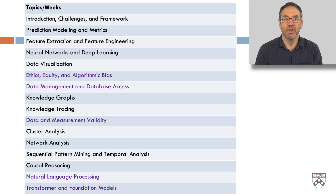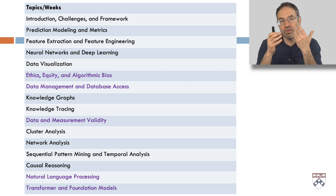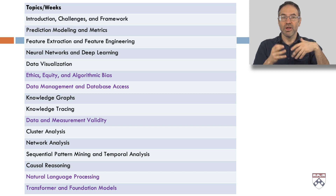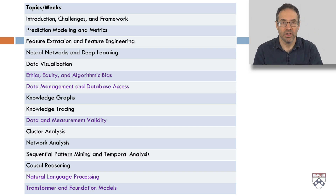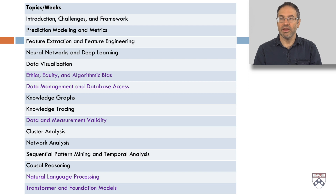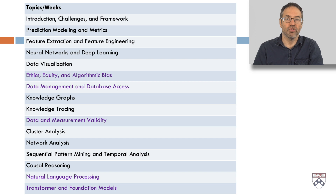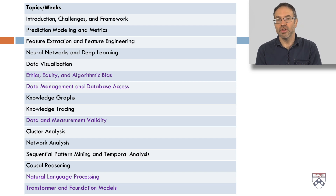Across the weeks of the certificate program, here's the outline. This week: introduction, challenges, and framework — setting the groundwork. Next week: prediction modeling and metrics, with a deep dive on classification and regression and how we evaluate models. We'll then cover feature extraction and feature engineering, since digital learning platforms have very complex data that must be transformed into meaningful variables. Following that, recent advances in neural networks and deep learning, notably for sequential classification and other forms of prediction modeling.